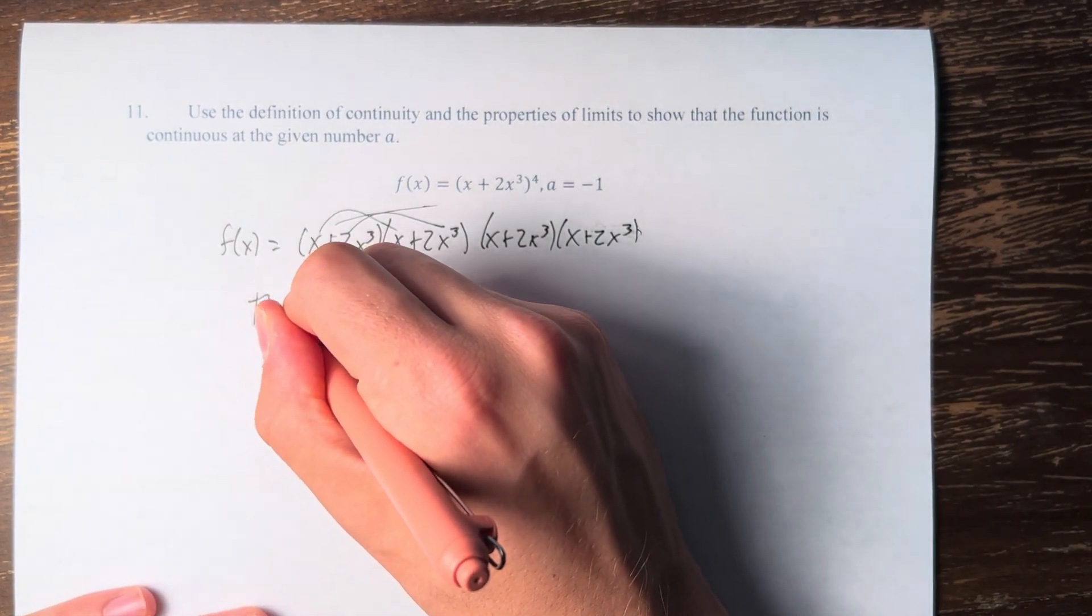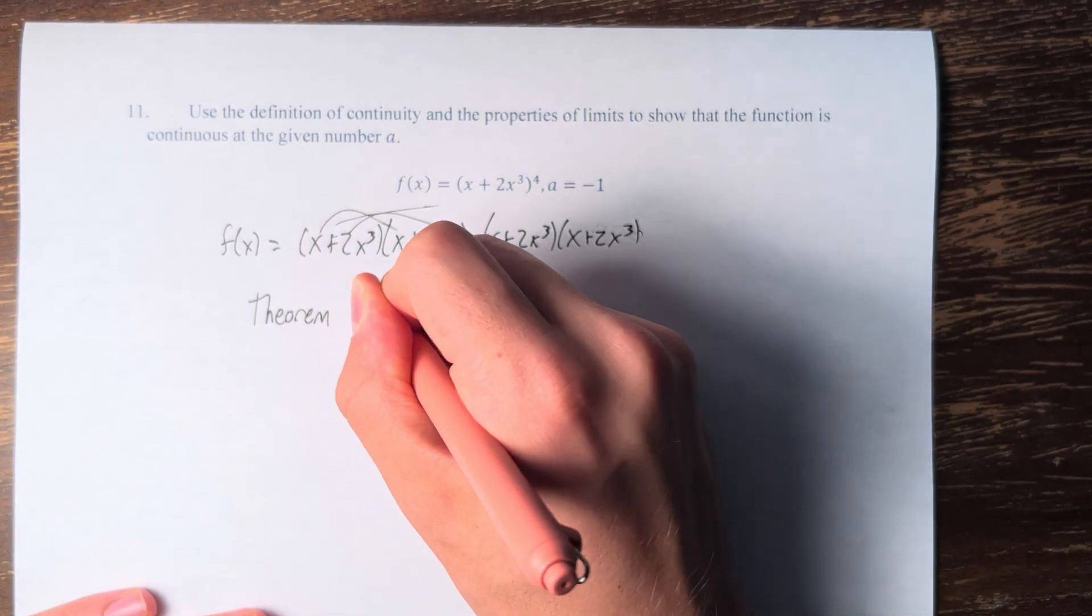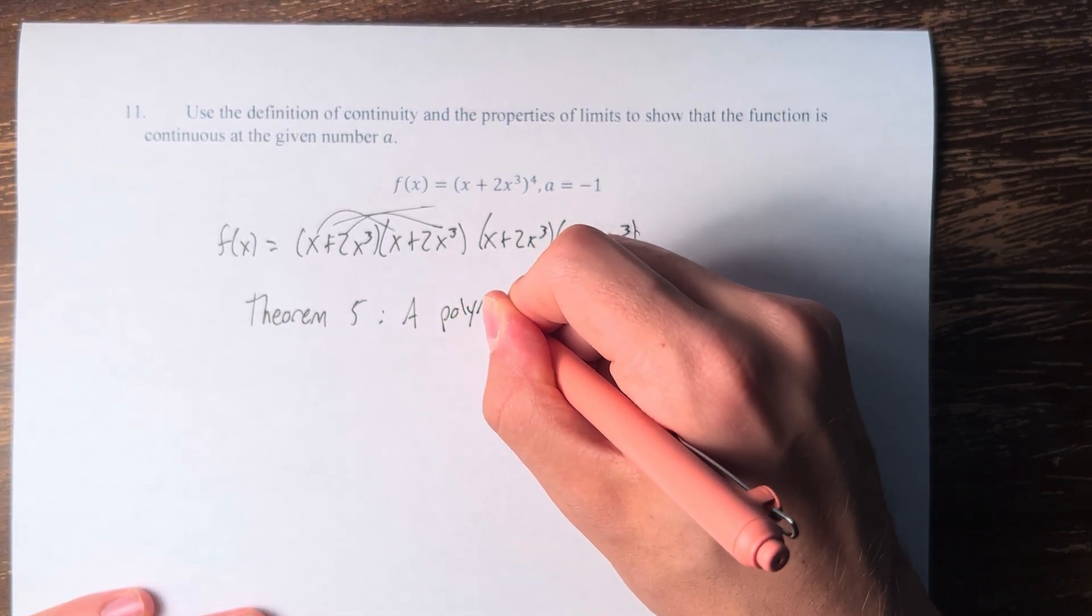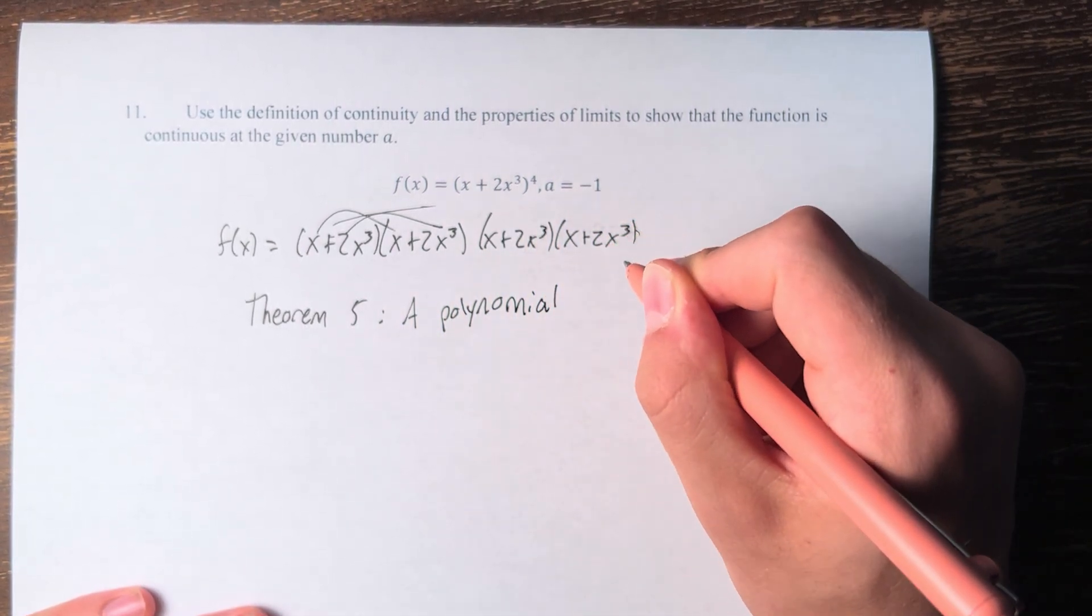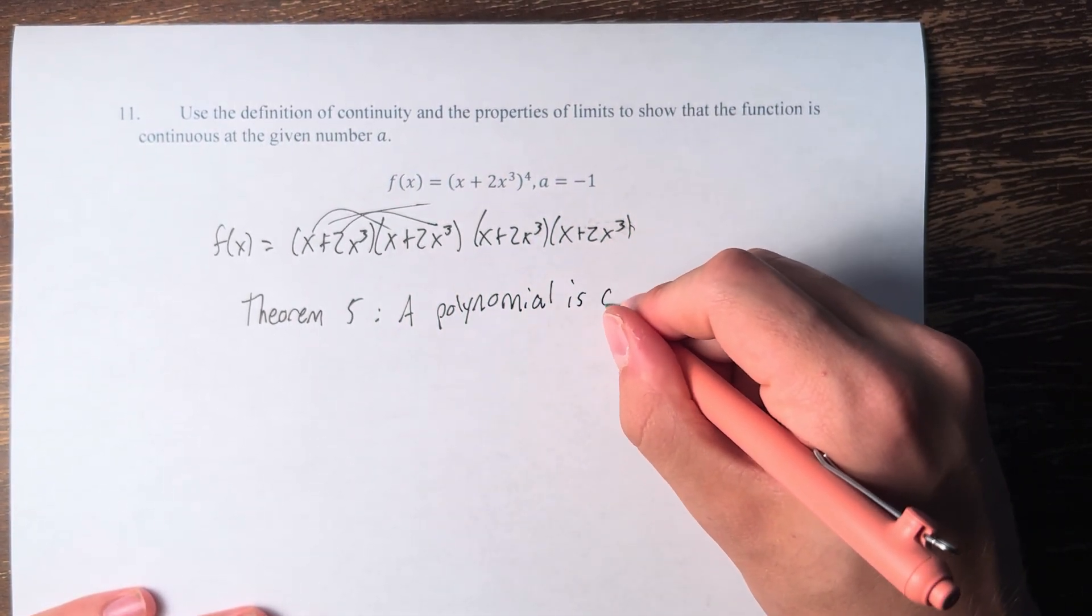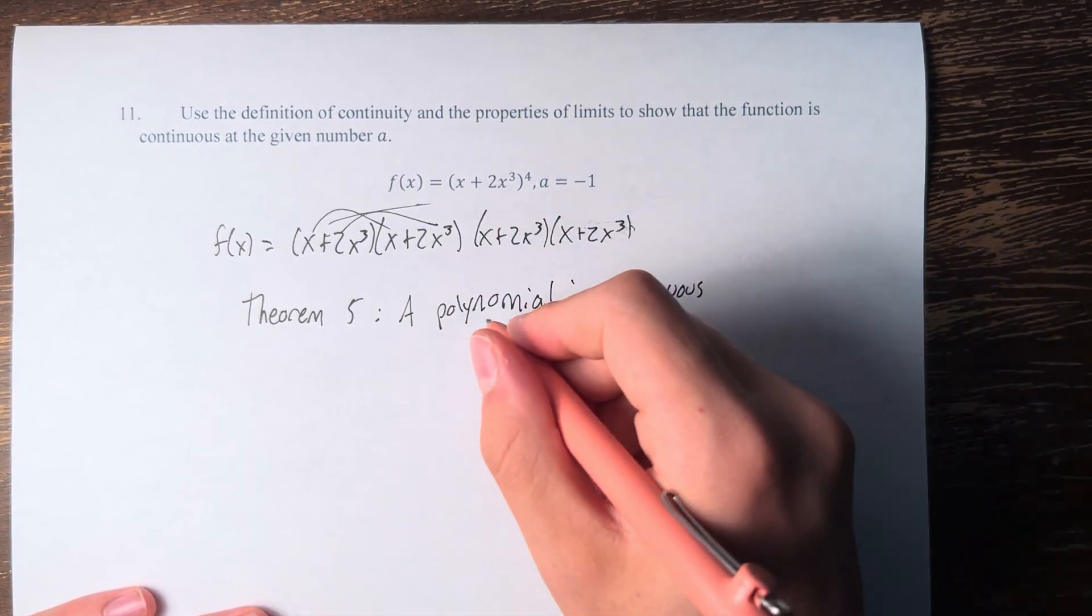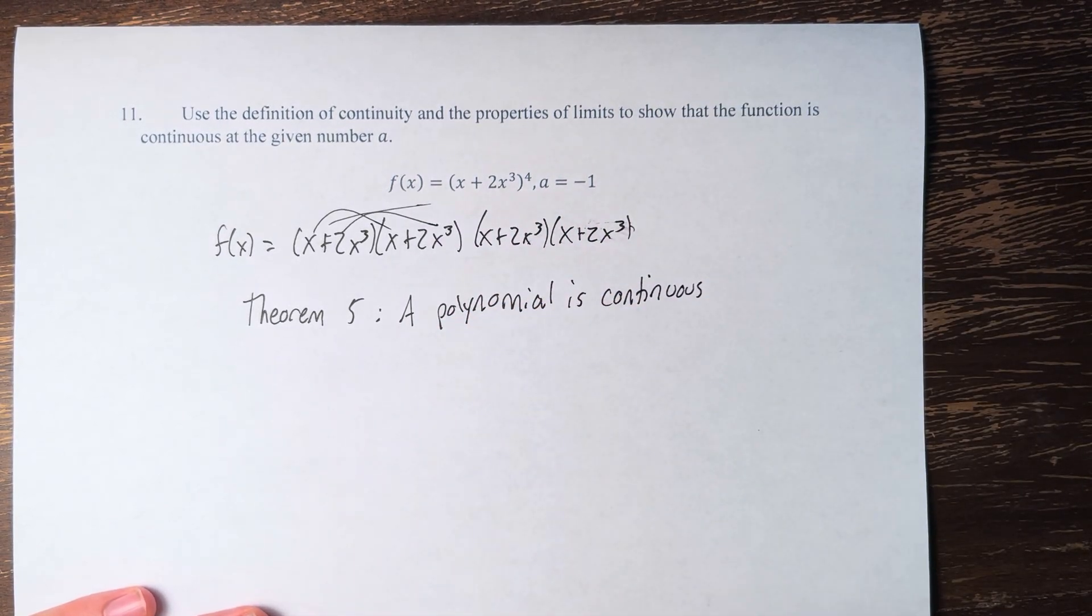And theorem 5, as marked in the book, states that a polynomial is continuous everywhere. For any value of a that we plug in, the polynomial is continuous. Therefore, the function is continuous at the given number a.